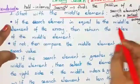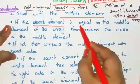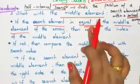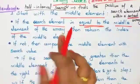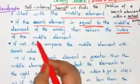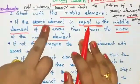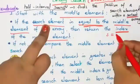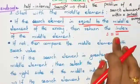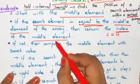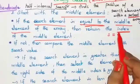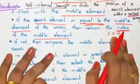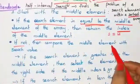Three cases exist. Case 1: if the search element is equal to the middle element of the array, return the index position of the middle element. This means you found your search element, so print the index position and stop the search here.